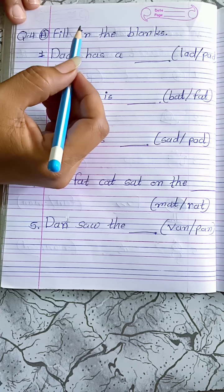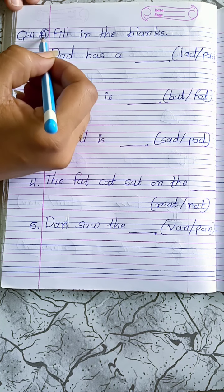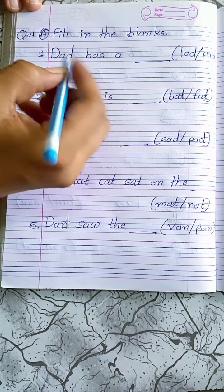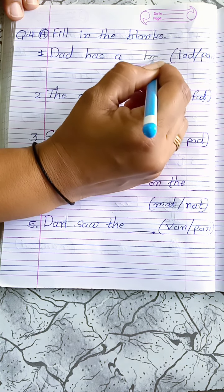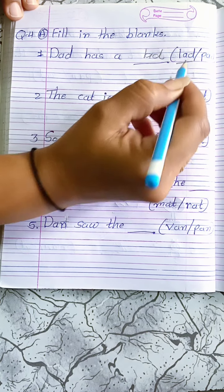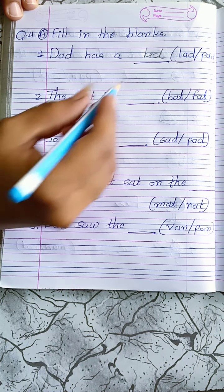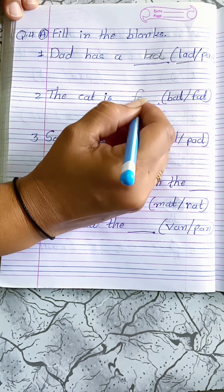Now, turn the page. Question 4A: Fill in the blanks. Dad has a lead: L-A-D, lead. The cat is fat: F-A-T, fat.